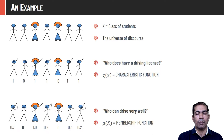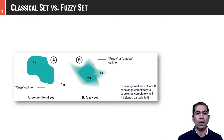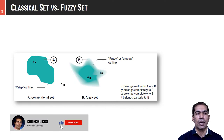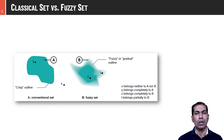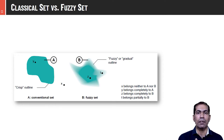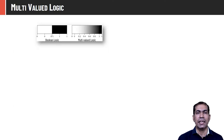Consider two sets: A is a crisp set, B is a fuzzy set. Element x is neither part of A nor B; element y is only a member of A; element z belongs to B but not A. In the case of fuzzy set, the boundary is not crisp — it is fuzzy. The boundary defines the membership value for a particular element; as we move away from the boundary, the membership value decreases. So element t is in the fuzzy set, but its membership value is between 0 and 1.